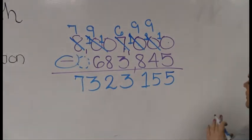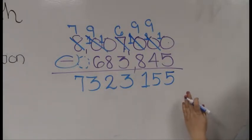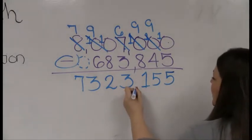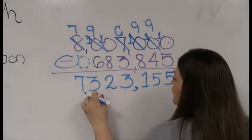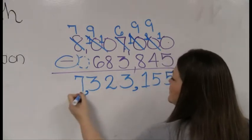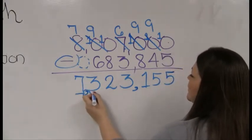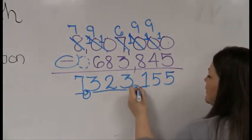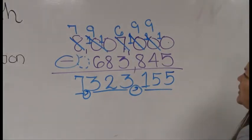Now this number can be really challenging for you to read. My recommendation is before you ever try to read a number, place the commas. Remember to place commas: we start at the right and we count by threes. 1, 2, 3, comma. 1, 2, 3, comma. So this is seven million three hundred and twenty three thousand one hundred and fifty five.